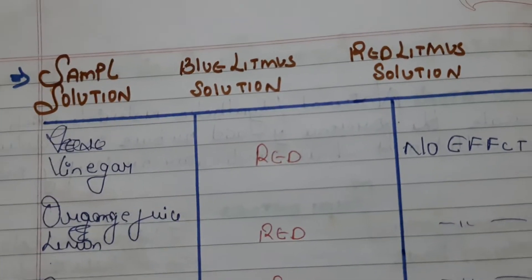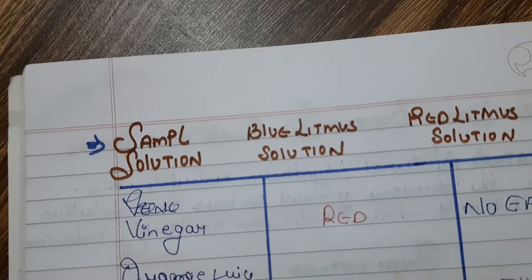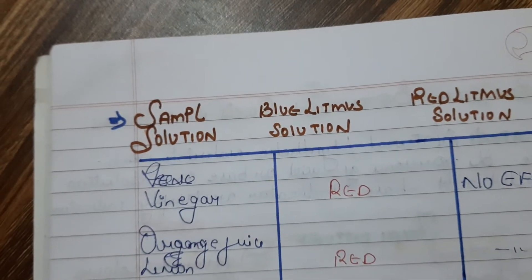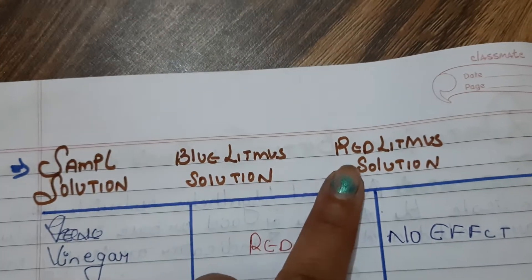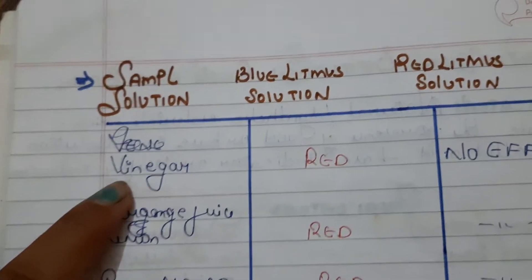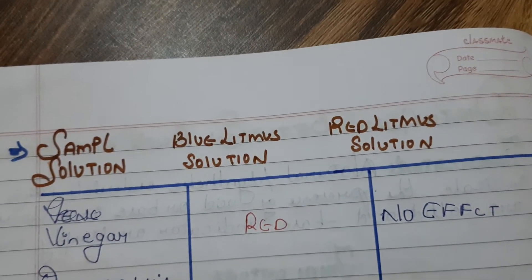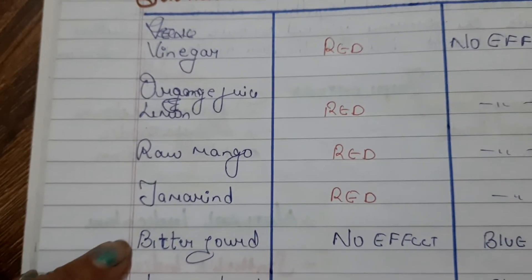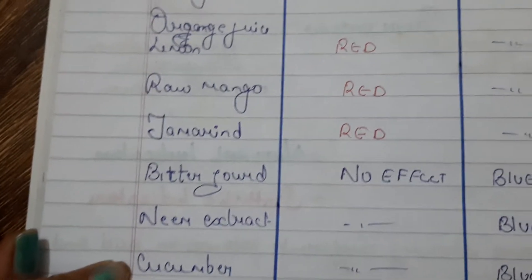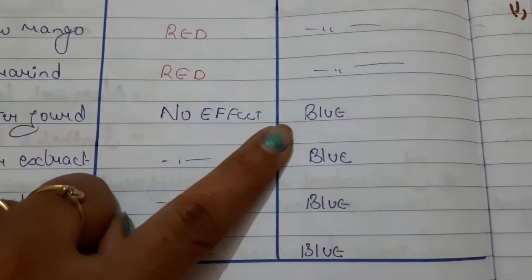To test samples using blue litmus and red litmus solutions: vinegar turns blue litmus red, with no effect on red litmus. Orange juice, raw mango juice, and tamarind also turn blue litmus red — meaning they are acidic. On the other hand, bitter gourd, neem extract, and cucumber turn red litmus blue — meaning they are basic.